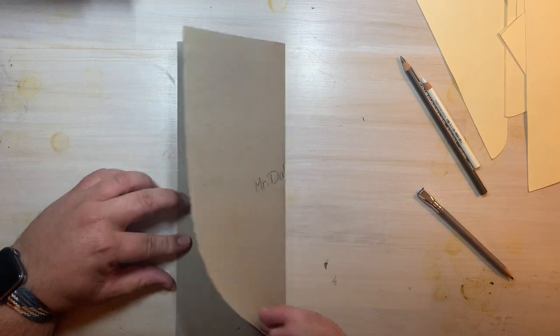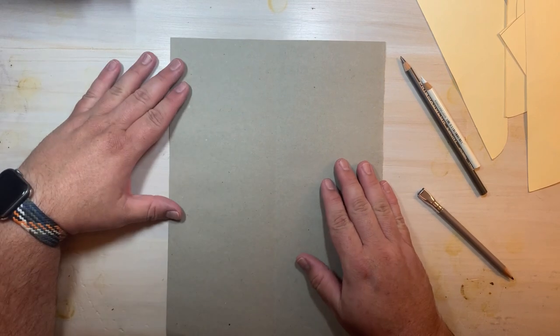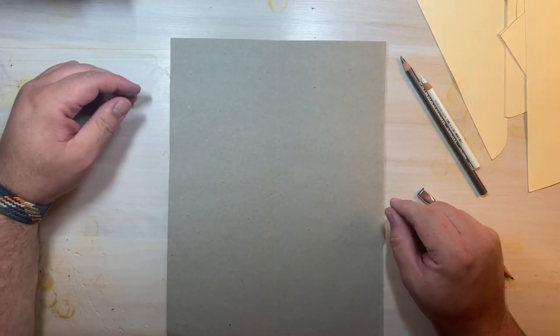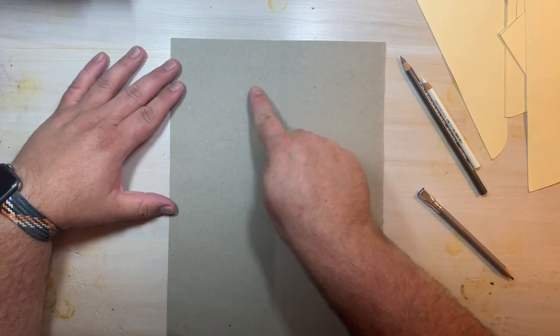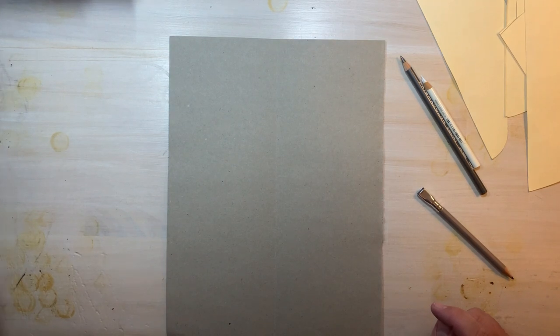Sometimes in the art room we call this a hot dog fold because it's long and skinny like a hot dog bun. Now when we open up our paper and press it flat we still see a crease going from the top to the bottom. This is where I will put my head shape.